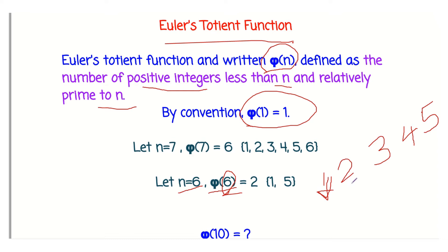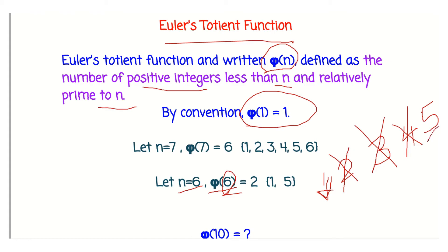Next, consider 2: the common divisors of 2 and 6 are 1 and 2, so 2 is not relatively prime to 6. For 3: the common divisors of 3 and 6 are 1 and 3, so 3 is not relatively prime. For 4: the common divisors of 4 and 6 are 1 and 2, so 4 is not relatively prime to 6. For 5: the common divisors of 5 and 6 are just 1, so 5 is relatively prime. So 1 and 5 satisfy the condition.